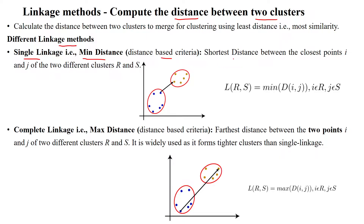Single linkage finds the shortest distance between the closest data points i and j of two different clusters named r and s. For example, this is r and this one is s. In these two different clusters we have n number of data points in each cluster. We find the shortest distance between two data points in different clusters — this data point from cluster r and this data point from cluster s — which have the shortest distance compared to other data points.